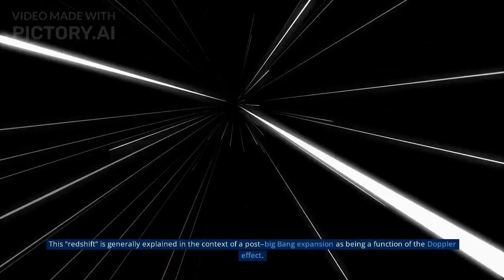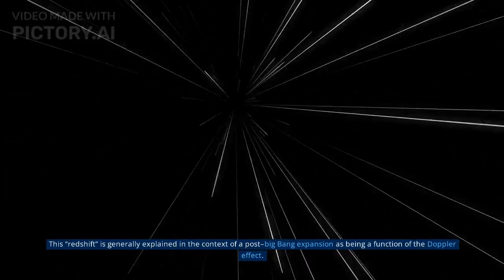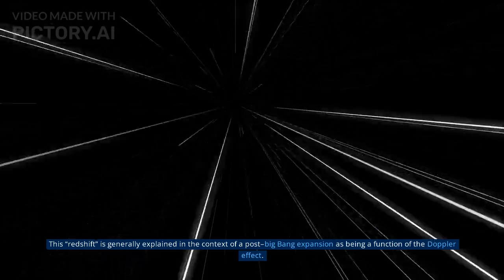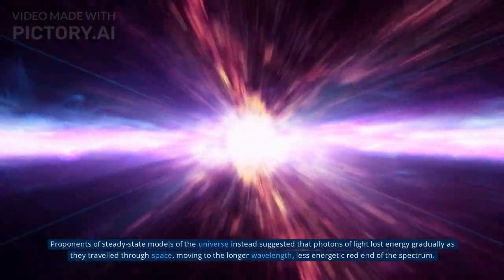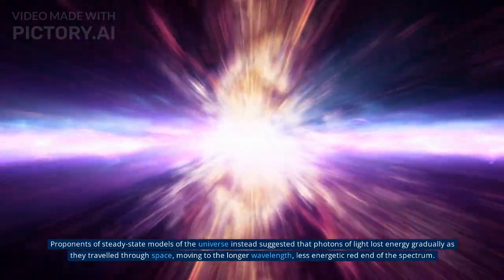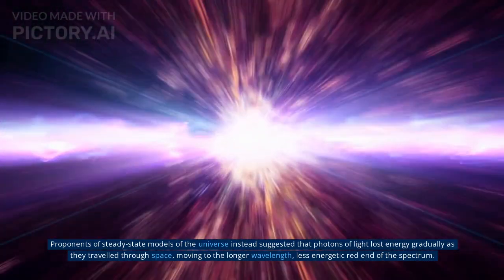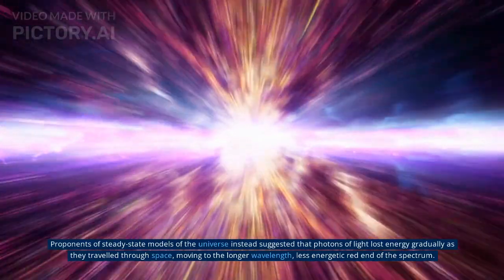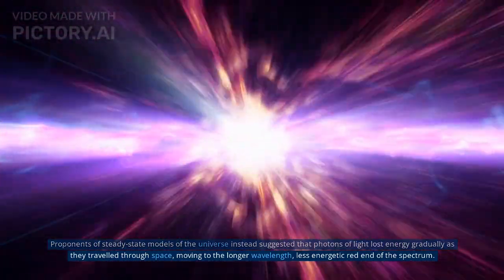This redshift is generally explained in the context of a post-Big Bang expansion as being a function of the Doppler effect. Proponents of steady-state models of the universe instead suggested that photons of light lost energy gradually as they traveled through space, moving to the longer wavelength, less energetic red end of the spectrum. This theory was first proposed by Fritz Zwicky in 1929.